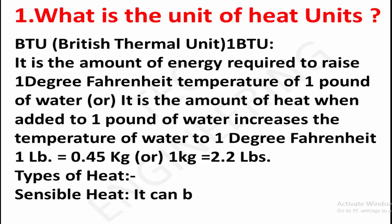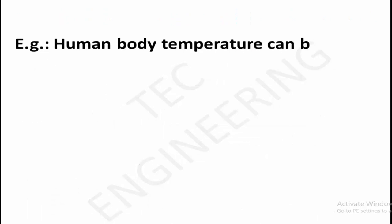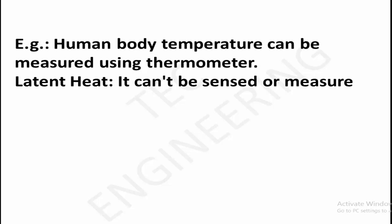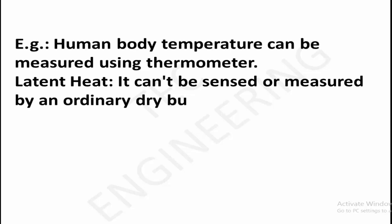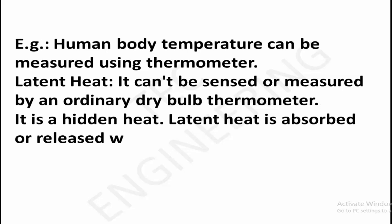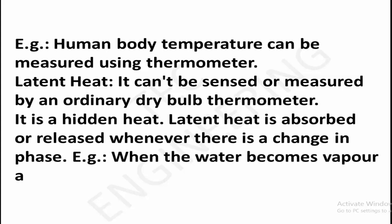Types of heat: Sensible heat — it can be sensed or measured by an ordinary dry bulb thermometer, e.g., human body temperature can be measured using a thermometer. Latent heat — it is a hidden heat that cannot be sensed by an ordinary dry bulb thermometer. Heat is absorbed or released whenever there is a change in phase, e.g., when water becomes vapor and vice versa.